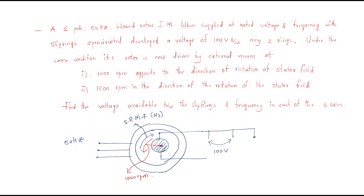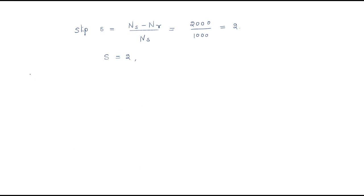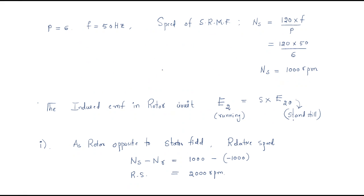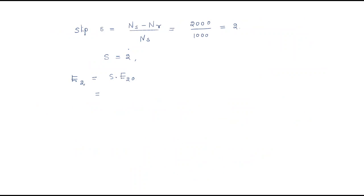We need to find the voltage available between the slip rings. The voltage developed in the rotor winding is slip × standstill voltage. The standstill voltage is 100 volts and slip is 2, so the voltage developed is 2 × 100 = 200 volts. The rotor frequency is slip × supply frequency = 2 × 50 = 100 Hz.